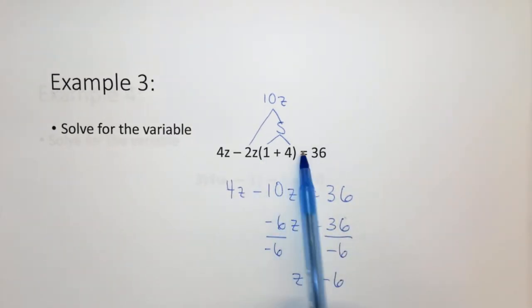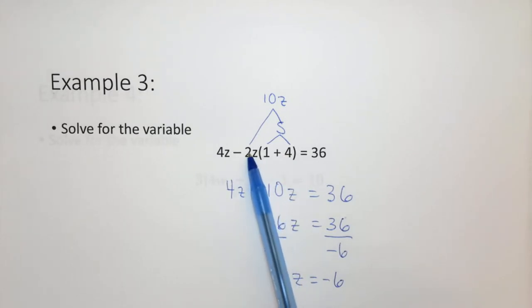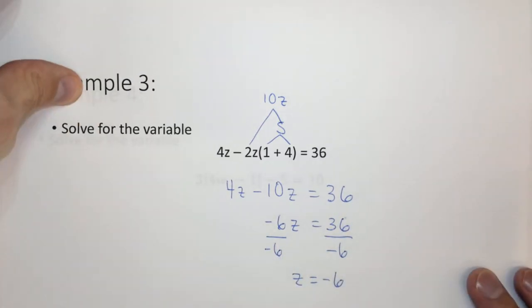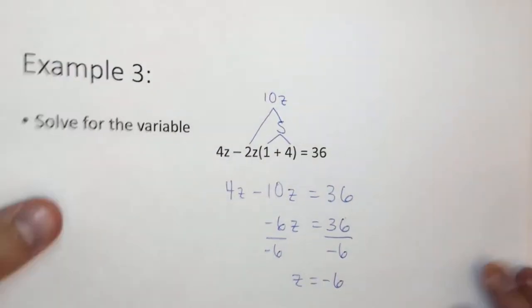We first simplified the number inside the parentheses. We then multiplied it by the z, because multiplication was next. We then added the two z terms together because they're like terms, and the number without the variable is not a like term. Then we divided both sides by negative 6.